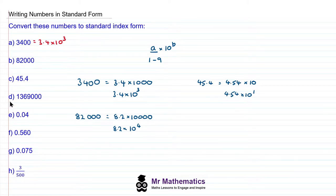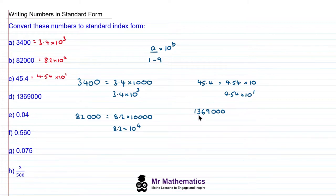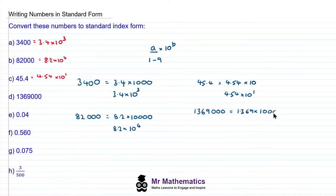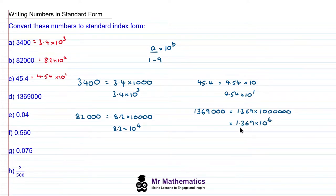Do you want to try and write question D in standard form? You can pause the video and resume it when you're ready. So for question D, we have 1,369,000. To write it in standard form, we write this as 1.369, and we need to multiply this by 1,000,000, which is 6 zeros — 1, 2, 3, 4, 5, 6. In standard form, we write this million as a power of 10, so we have 1.369 times 10 to the power of 6.